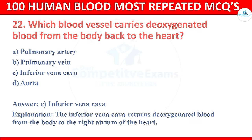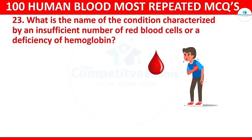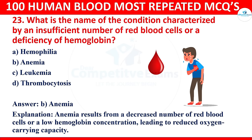Question 23: What is the name of the condition characterized by an insufficient number of red blood cells or a deficiency of hemoglobin? Options: hemophilia, anemia, leukemia, or thrombocytosis. The correct answer is anemia. Anemia results from a decreased number of red blood cells or a low hemoglobin concentration, leading to reduced oxygen-carrying capacity.